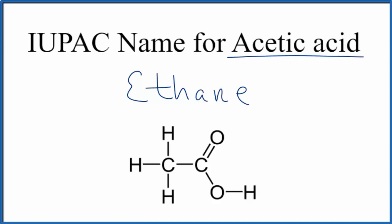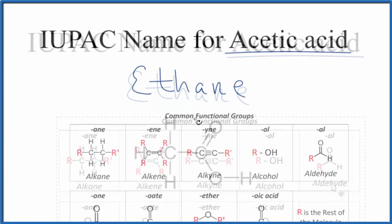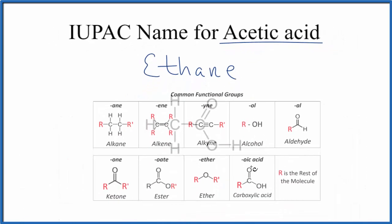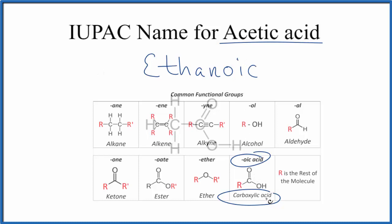Let's look at this chart to figure that out. Here we have a carbon double-bonded to an oxygen with the OH and the rest of the molecule — that other carbon. What we'll do is take off the 'e' ending and add 'oic' because this is a carboxylic acid. This is the functional group for a carboxylic acid. Then we add the word 'acid' to the end — so ethanoic acid. This is the systematic IUPAC name for acetic acid.